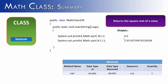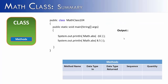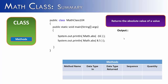The next method is ABS, short for absolute value. It returns the absolute value of a value. So negative 16 and 8.5 as arguments return 16 and 8.5. Breaking it down: the method name is ABS, the data type in is an integer, and it returns an integer. Sequence is not applicable here because there's only one value going in, and the quantity is one.